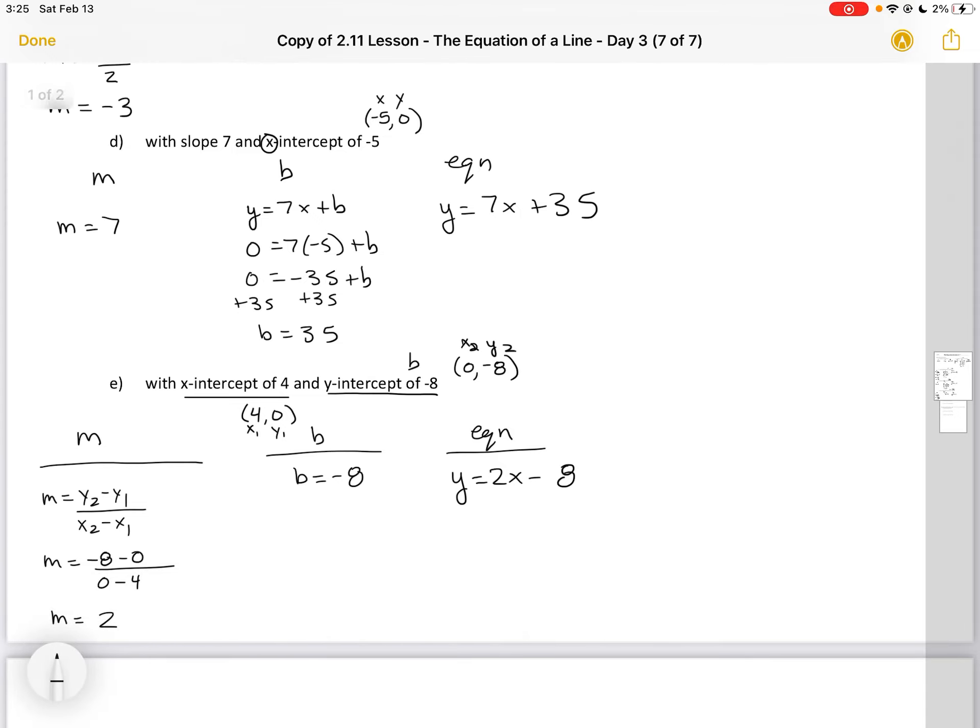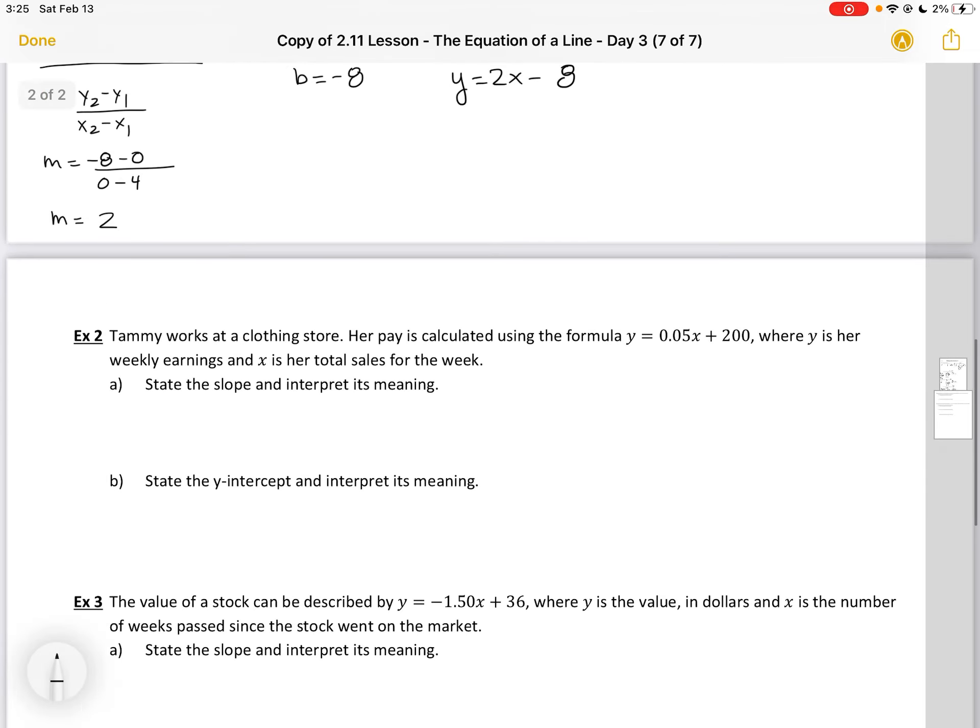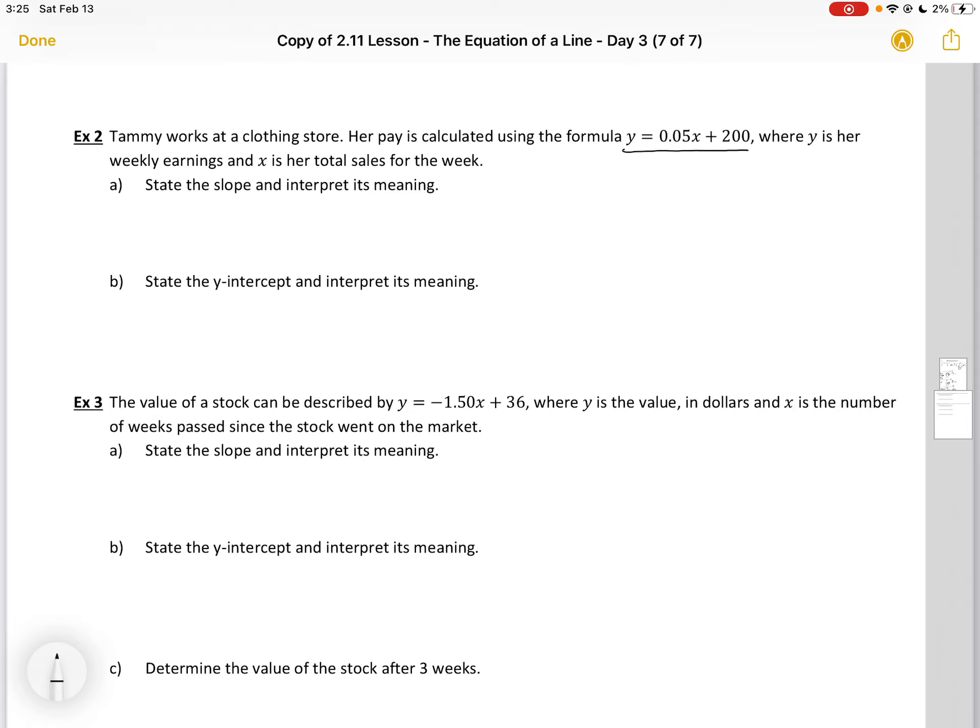You should be able to write the equation. You should also be able to interpret it in terms of a word problem. In this example here, Tammy works at a clothing store. Her pay is calculated using the formula y equals 0.05x plus 200, where y is her weekly earnings and x is her total sales for the week.